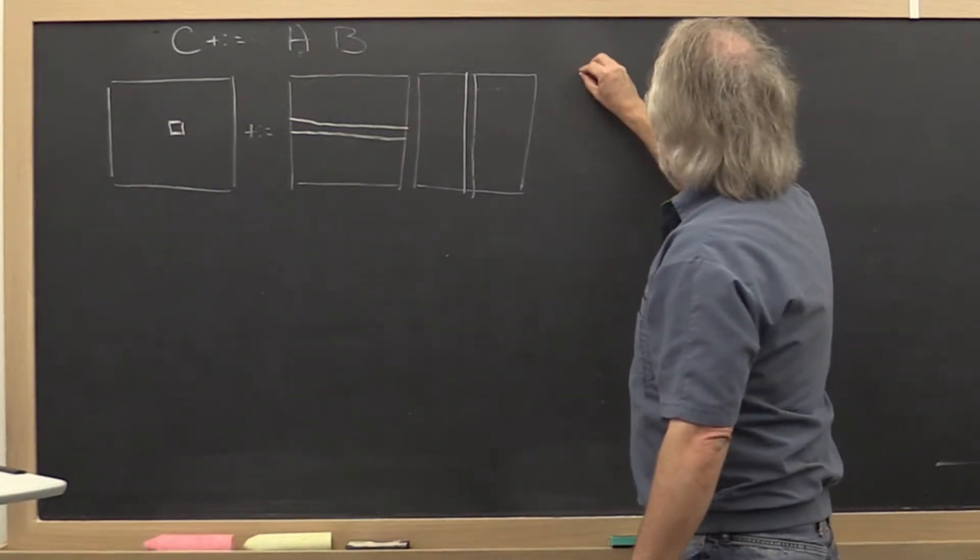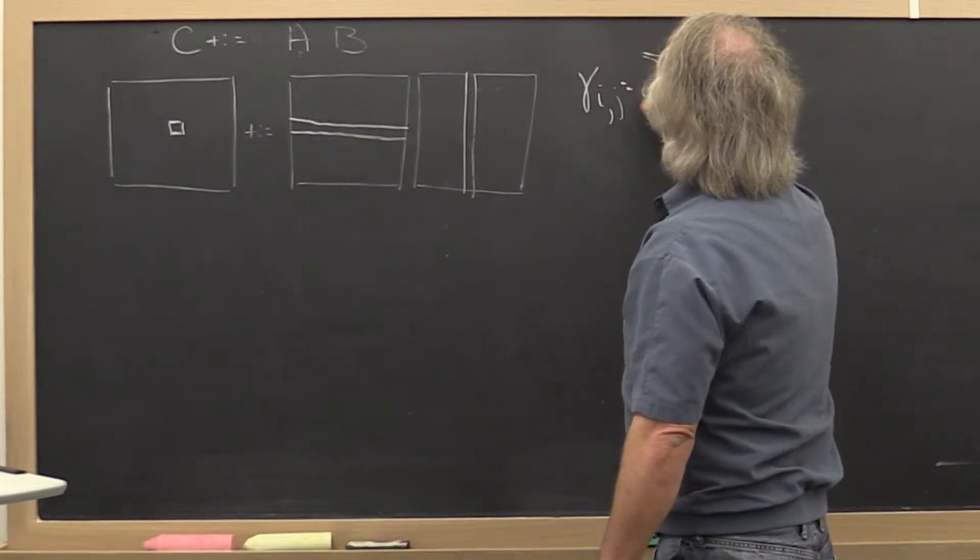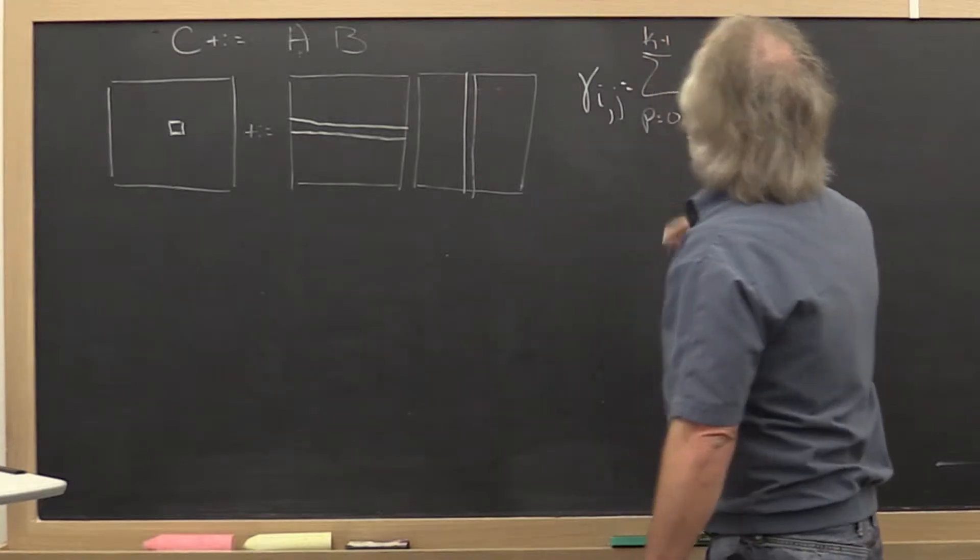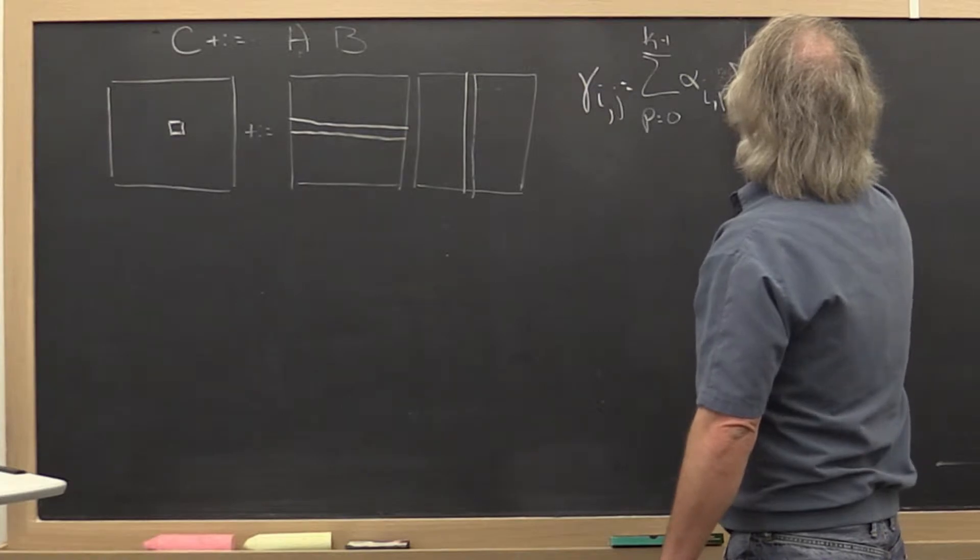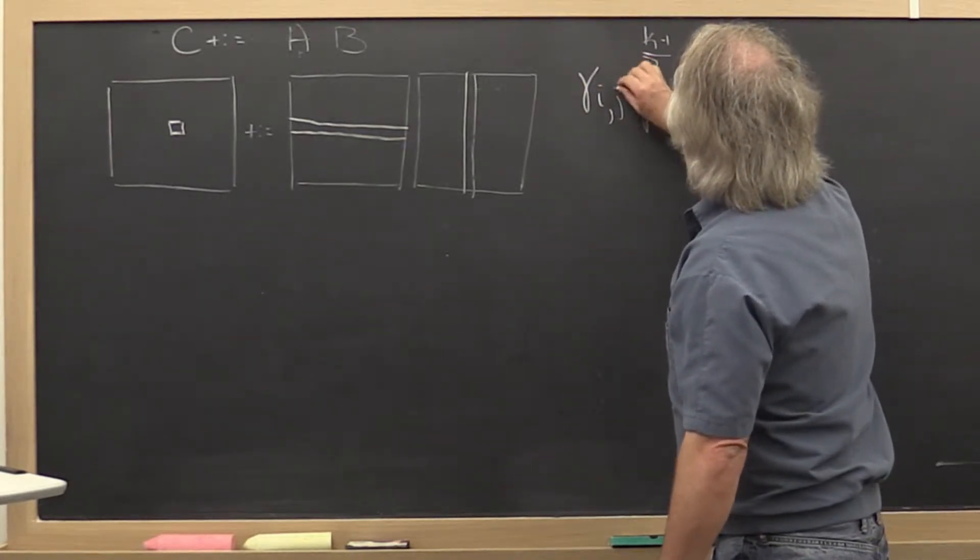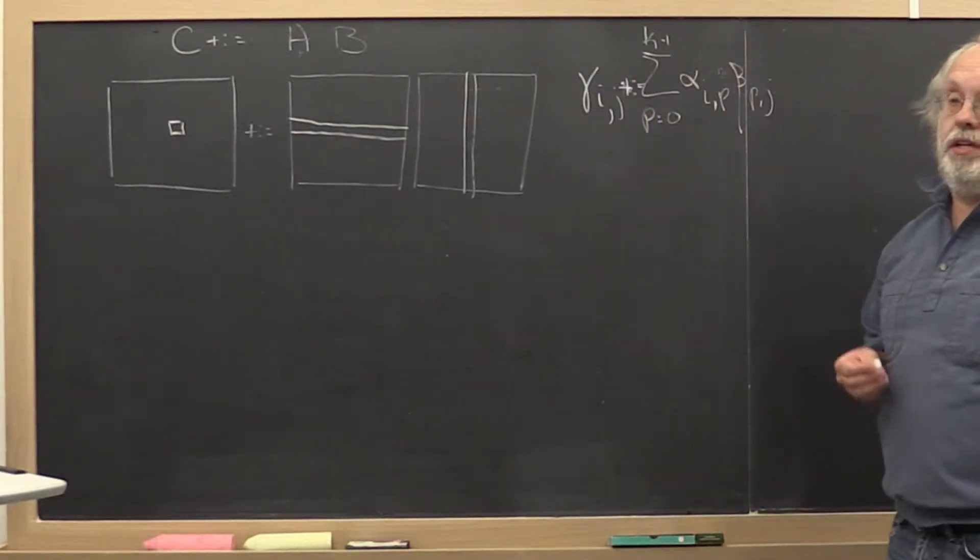And that then gives us the formula Cij is equal to the sum from P equals zero to K minus one of alpha Ip times beta Pj, except we want to add into the original entry in C.